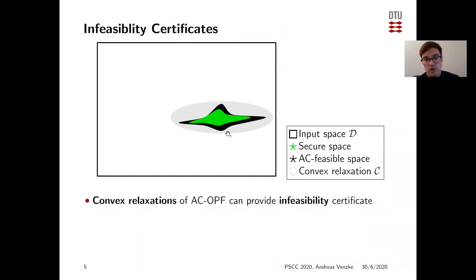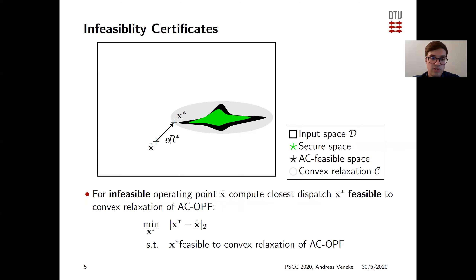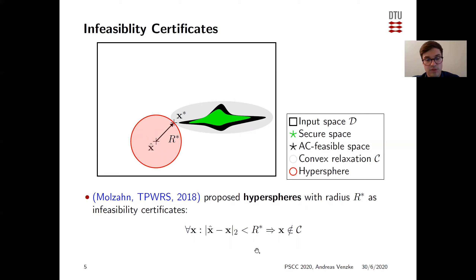In the next step, we look at the feasible space of convex relaxations of the AC OPF, which includes the AC feasible space, and the convex relaxation can provide an infeasibility certificate. For an infeasible operating point X-hat, we compute the closest dispatch X-star that is feasible to the convex relaxation by minimizing the Euclidean distance subject to X-star being feasible to the convex relaxation of the AC OPF. Dan Molson previously proposed hyperspheres with radius R-star as infeasibility certificates: any sample within the hypersphere is guaranteed to be infeasible and thus not part of the secure space.